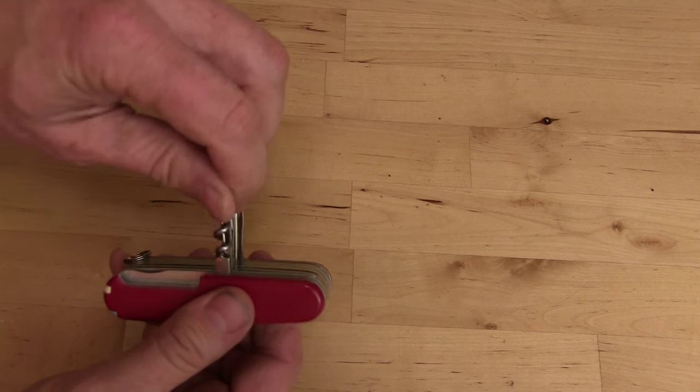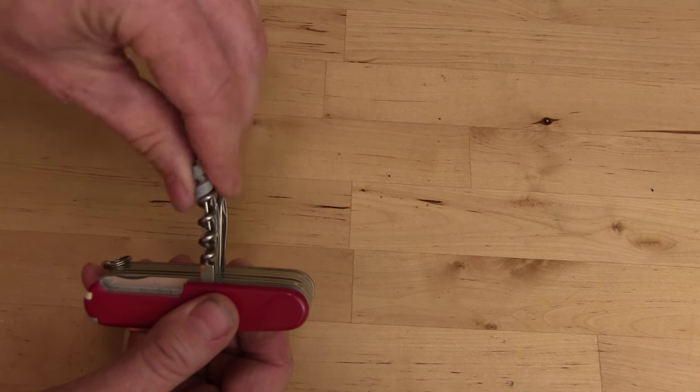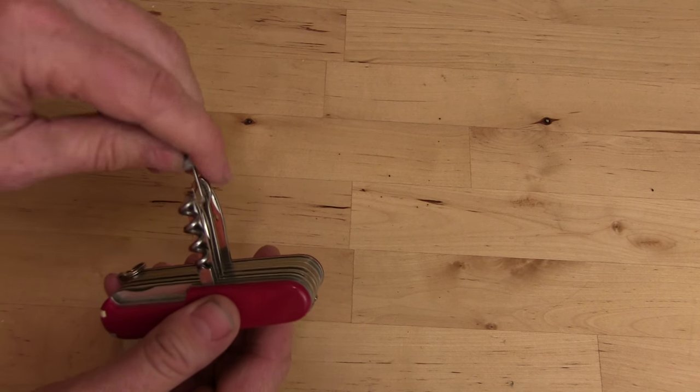Over to the back side. Hidden inside of the corkscrew, there's a little teeny tiny flat blade screwdriver.